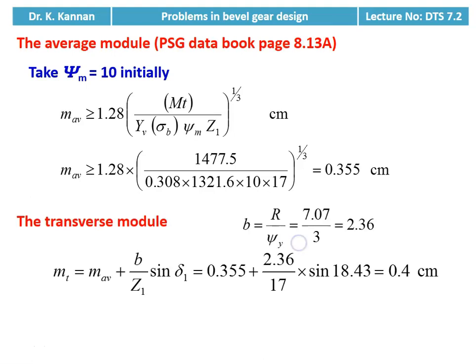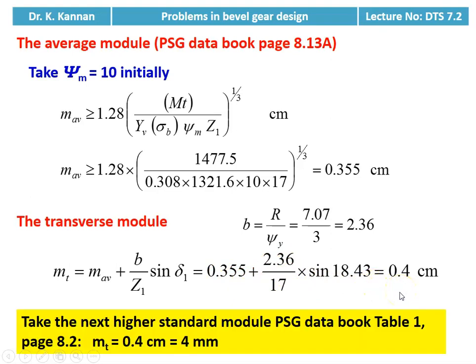Then we calculate the transverse module. For transverse module we require the face width B = R / ψY = 7.07 / 3 = 2.36. So transverse module mt = m_avg + (B / Z1) × sin δ1 = 0.355 + 2.36 / (17 × sin 18.43°) = 0.4 centimeter. Since 0.4 centimeter is also a standard value, we fix the transverse module as 0.4 centimeter, which is 4 millimeter.